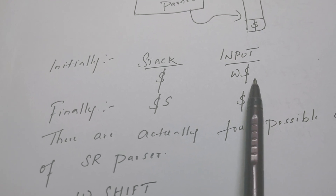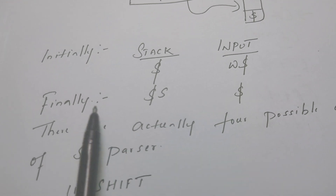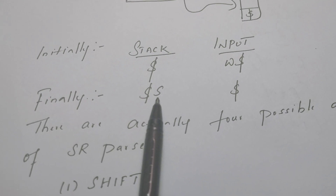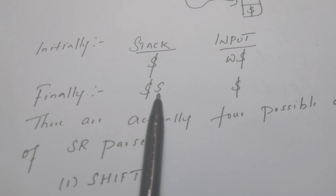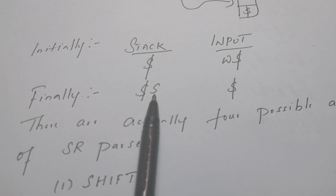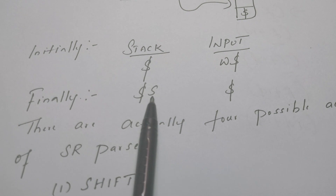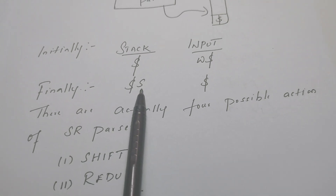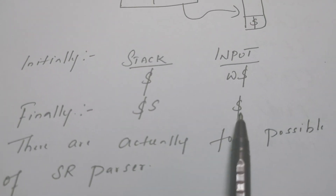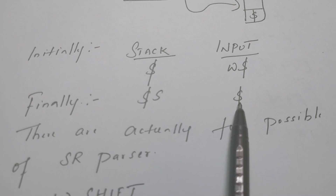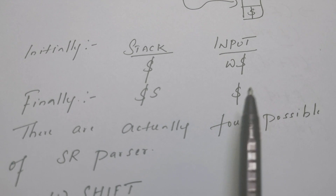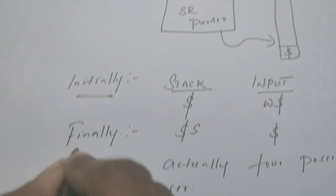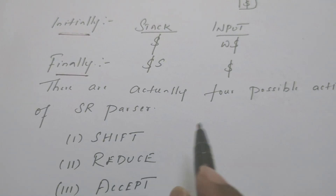Once parsing is done and the string is completely consumed, the stack should contain the start symbol of the grammar. Remember: bottom-up parsing means the parse tree is built from the leaves step by step, reducing up to the root. The root always holds the start symbol. Finally, the stack contains the start symbol and the input buffer contains only dollar — the right-end marker.